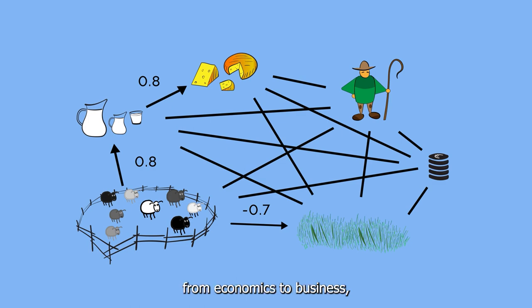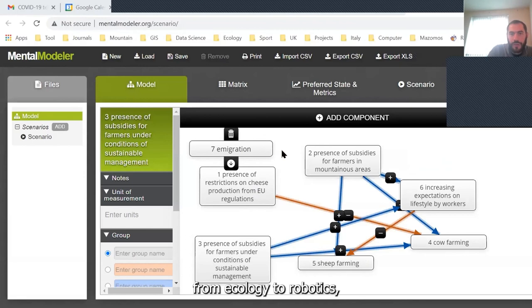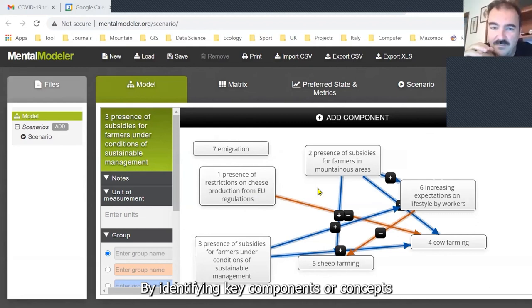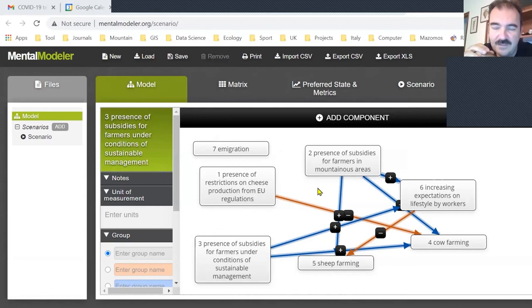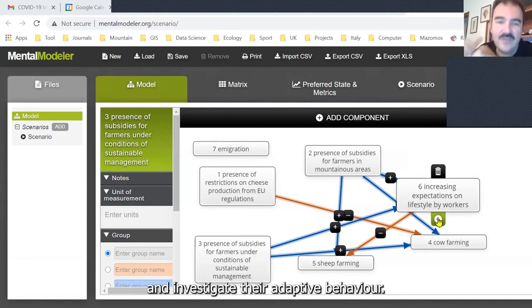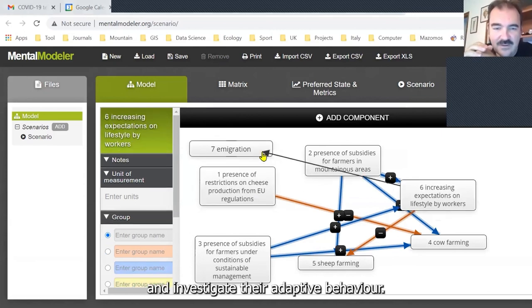From economics to business, from ecology to robotics, and it has recently expanded to landscape research and planning. By identifying key components or concepts and estimating the strength of their connections, we can map the fuzzy character of complex systems and investigate their adaptive behavior.